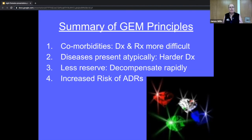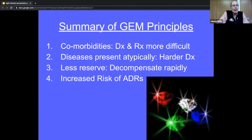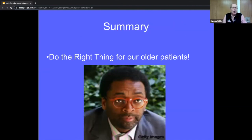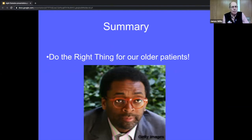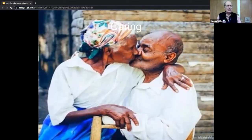In summary: the elderly have comorbidities that make diagnosis and treatment more difficult; diseases present atypically, making diagnosis harder; they have less reserve so they decompensate rapidly; and they have increased risk of adverse drug reactions, needing more care both in the ED and after discharge. The goal is to always do the right thing for our older patients, and that's what we're working toward by pursuing geriatric ED accreditation.